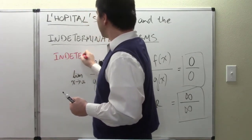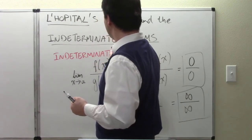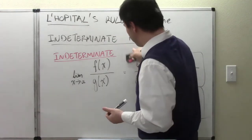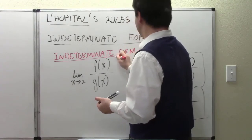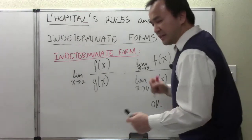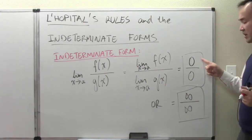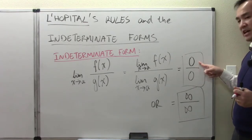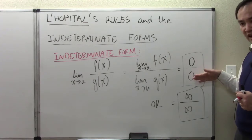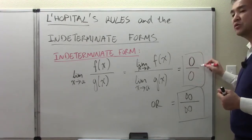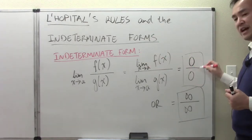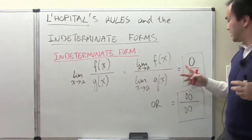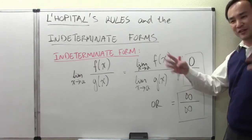Why do we call them indeterminate? We call them indeterminate simply because arriving at either of these two forms does not mean we say DNE. Zero over zero just means we have an inconclusive answer and we have to find a different way to solve the problem. It is not something we can determine at this step — we need to find a different solution.